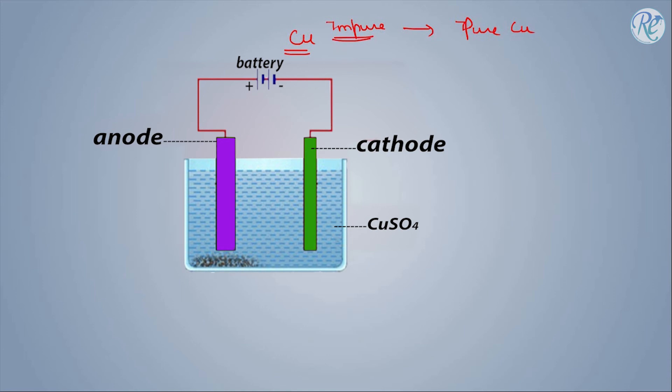As you can see in the diagram, there is a container having salt solution of the metal that has to be purified - that is copper sulfate in that case - and it will break down into copper ions and sulfate ions in solution.